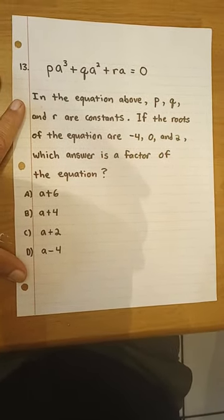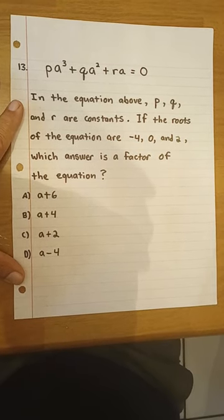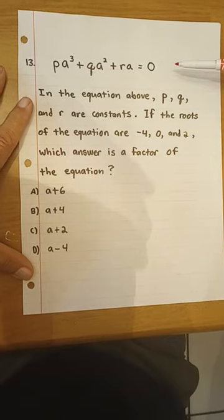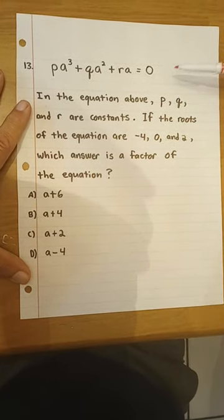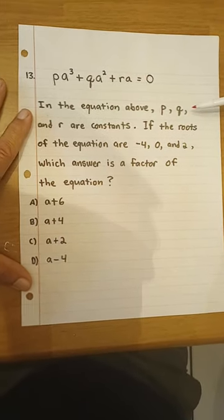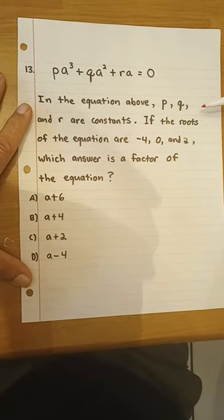So let's get going here and solve this. We have an equation which is pa³ + qa² + ra = 0, and it says in the equation above, p, q, and r are constants.